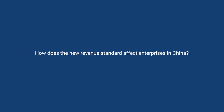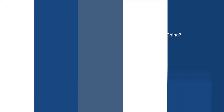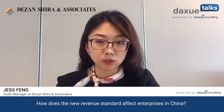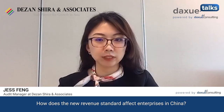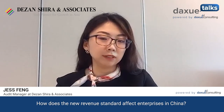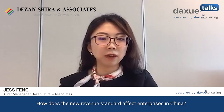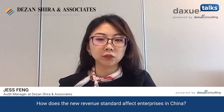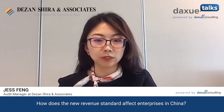How does the new revenue standard affect enterprises in China? The new revenue standard, the revised CAS 14, could potentially lead to substantial changes to revenue recognition policies of enterprises in China. Applying the five-step method would require the company to review its contracts, to modify the revenue recognition process, and to update the internal control policies accordingly.